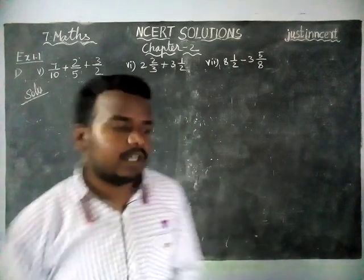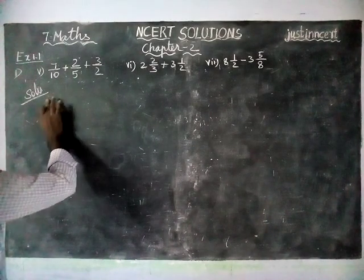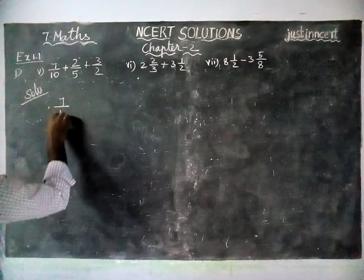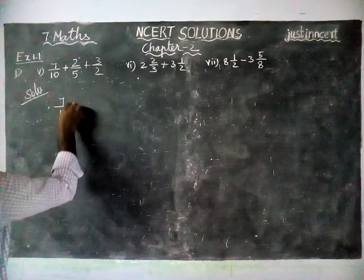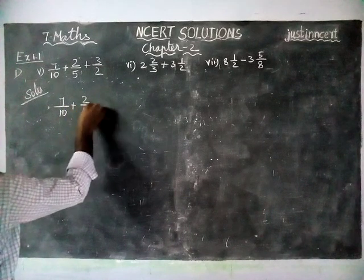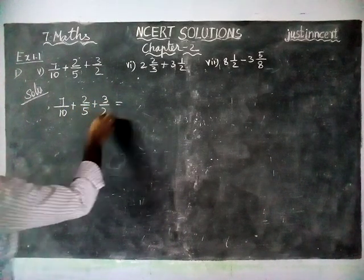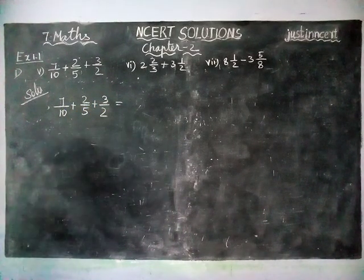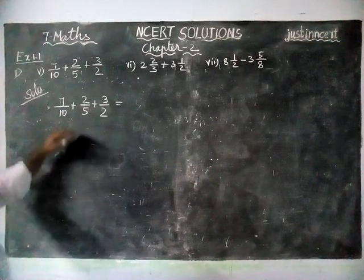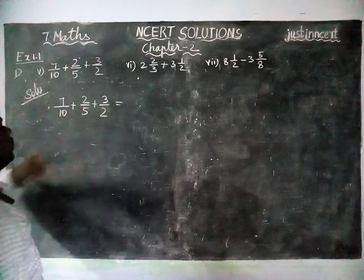Part (e): 7/10 plus 2/5 plus 3/2. Everything is unlike fractions, so we are going to convert this into like fractions.